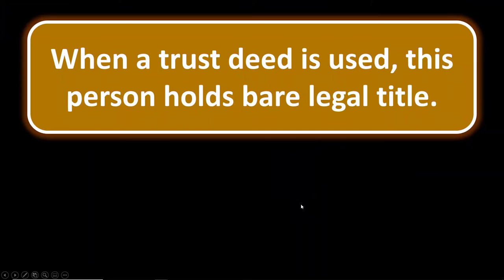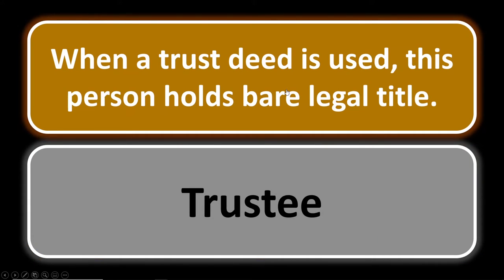Finance number four: when a trust deed is used, who holds bare legal title? In a trust deed, the trustor is the borrower, the beneficiary is the lender, and the trustee holds bare legal title. The trustee has the power to foreclose if the trustor defaults. Once the trustor pays off the entire loan, a deed of reconveyance transfers full legal title back to the trustor from the trustee.